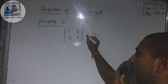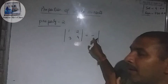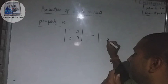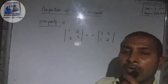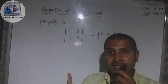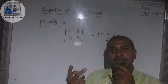Interchanging: the first row [1, 2] goes to the second row, and the second row [3, 4] goes to the first row, giving [3, 4; 1, 2]. This introduces a minus sign — so the sign of the determinant changes. This is the second property.